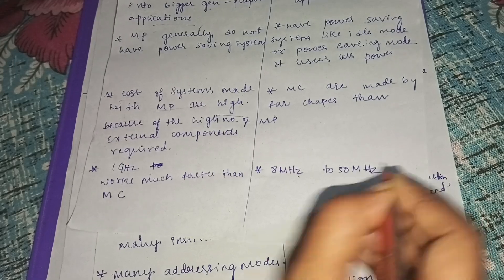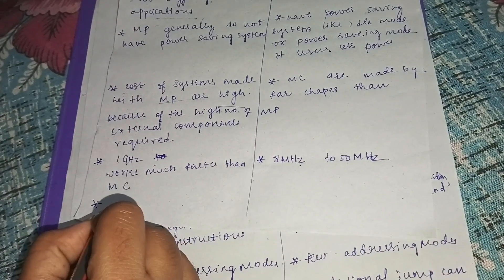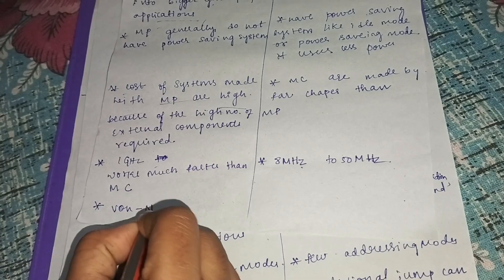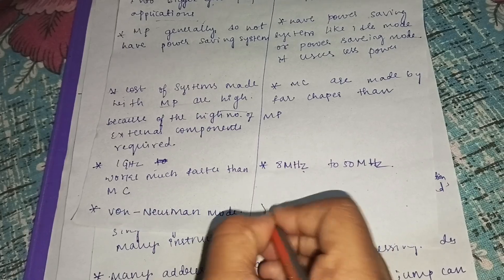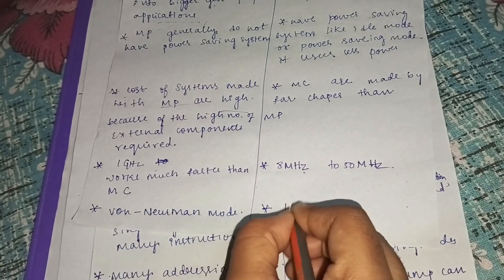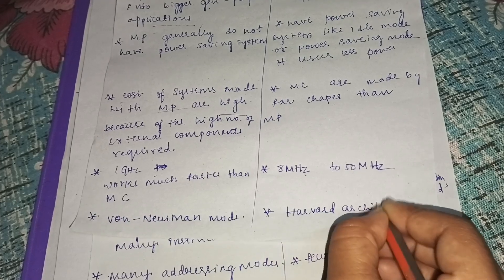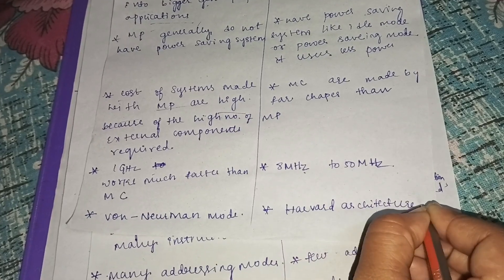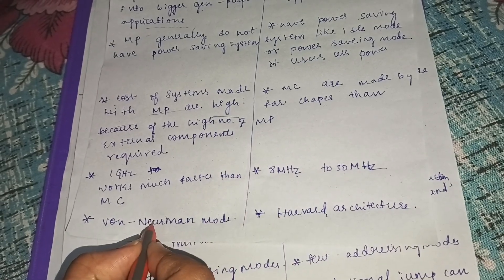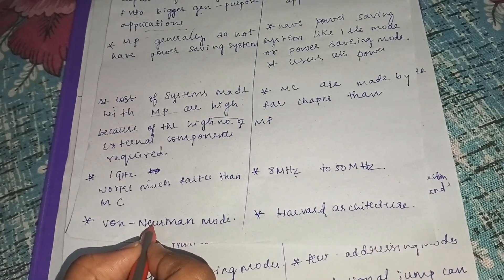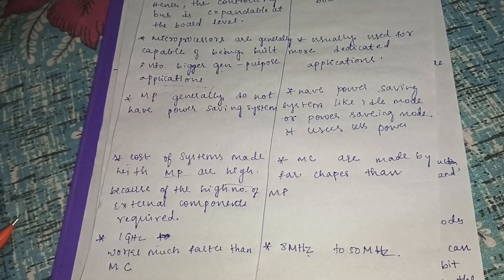The last point: microprocessors are based on the von Neumann model, where program memory and data memory are stored in the same memory module. Microcontrollers are based on Harvard architecture, where program memory and data memory are separate. Thank you students, see you in the next video.